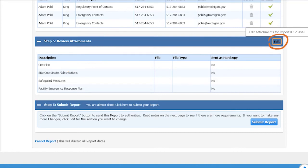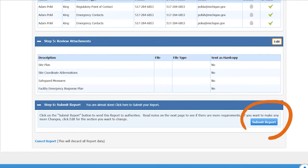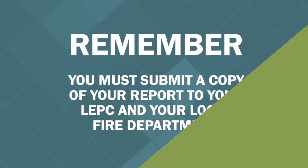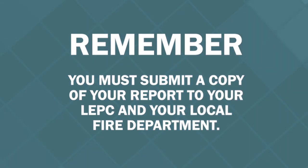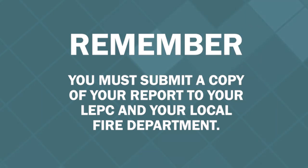Each step will have an Edit button that will allow you to manipulate the information in that step. Once you have completed Steps 1 through 5, you can go to Step 6 to submit the report. Please be aware that you must submit a copy of your report to your LEPC and local fire department if they do not participate in the online Tier 2 Manager program, by sending the report via email or postal mail.